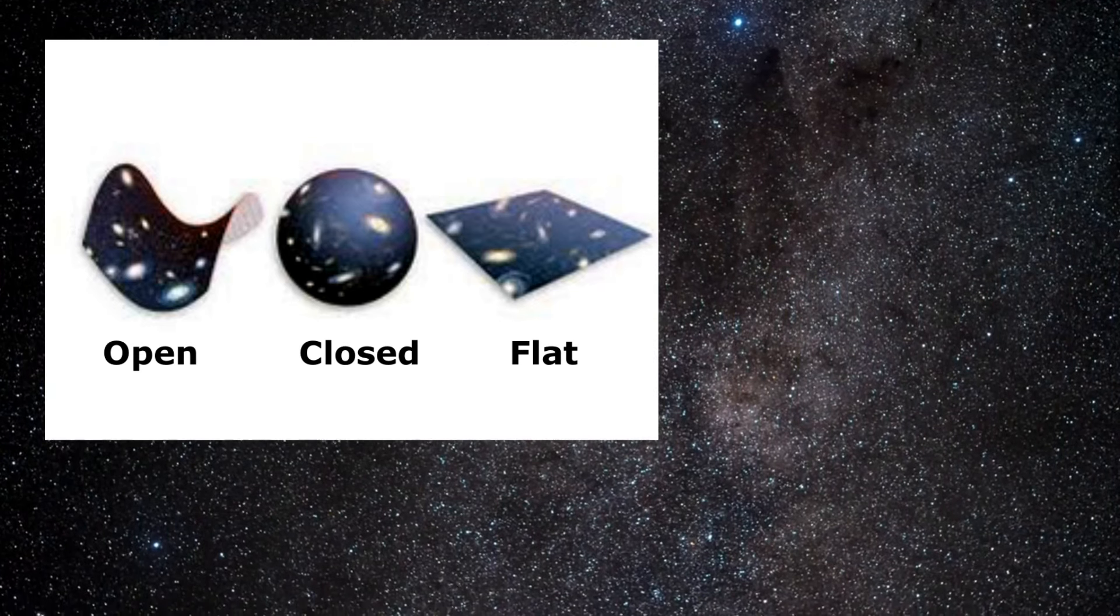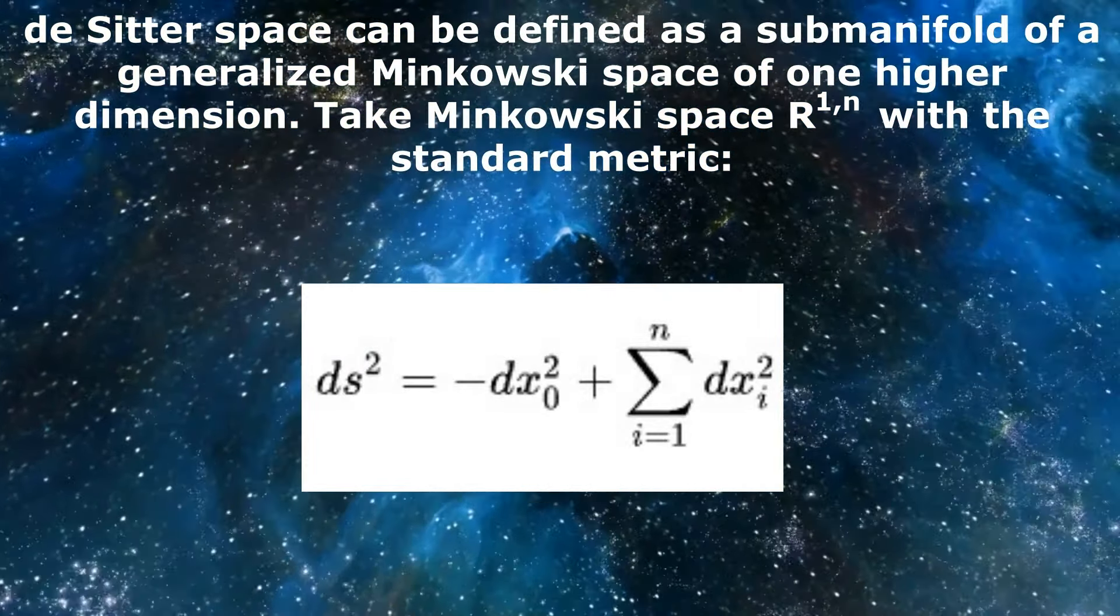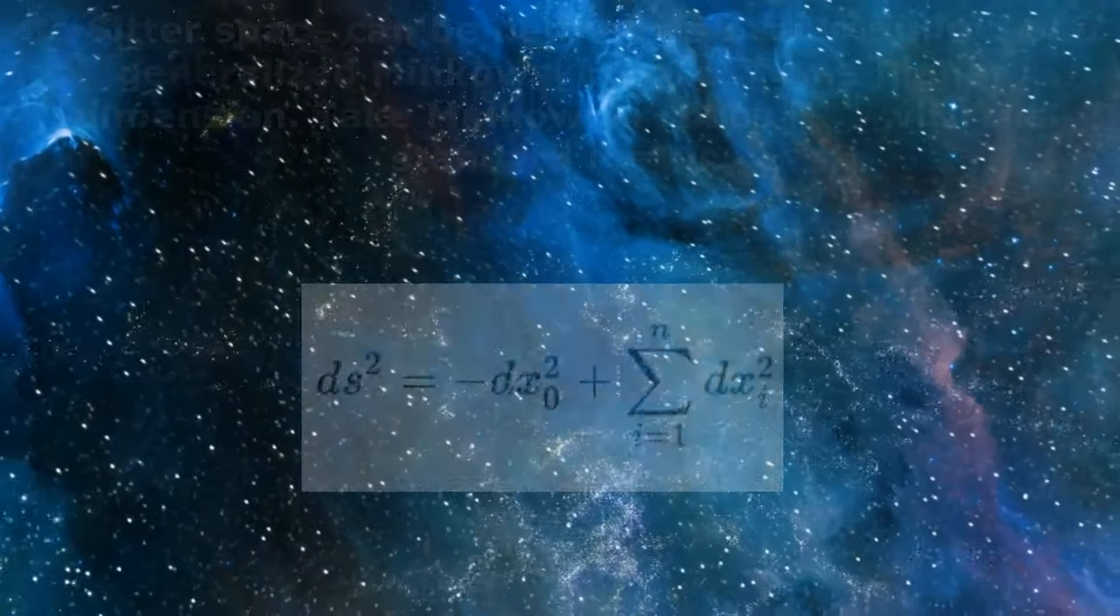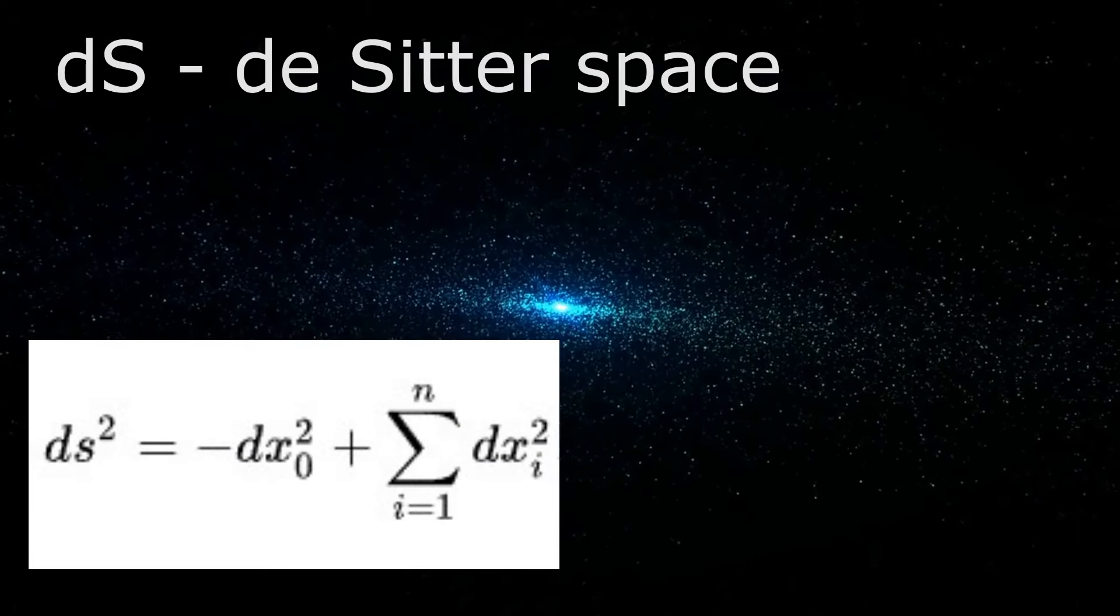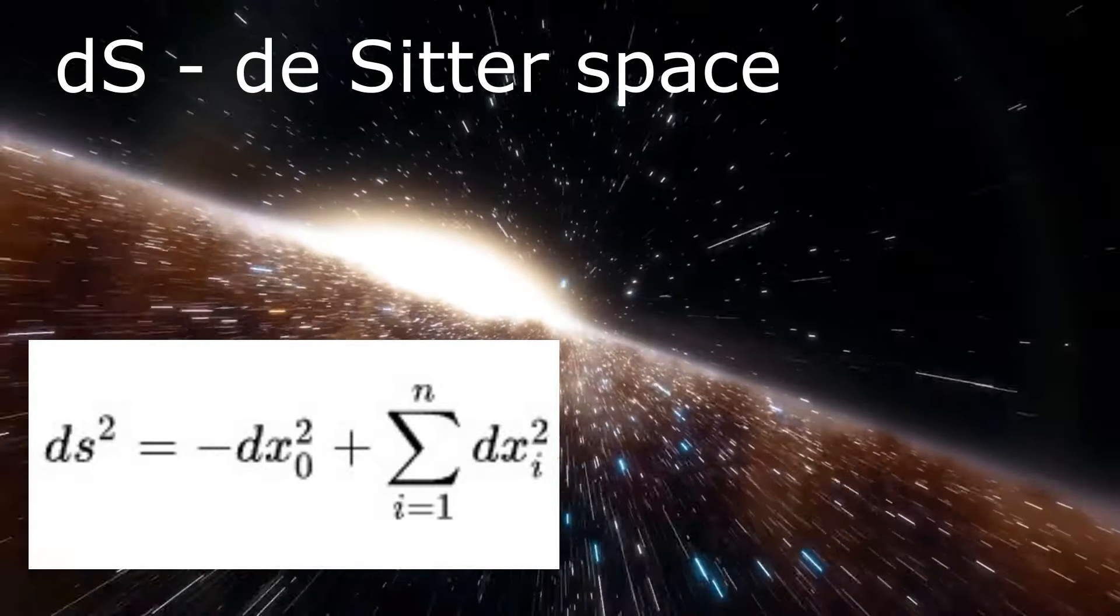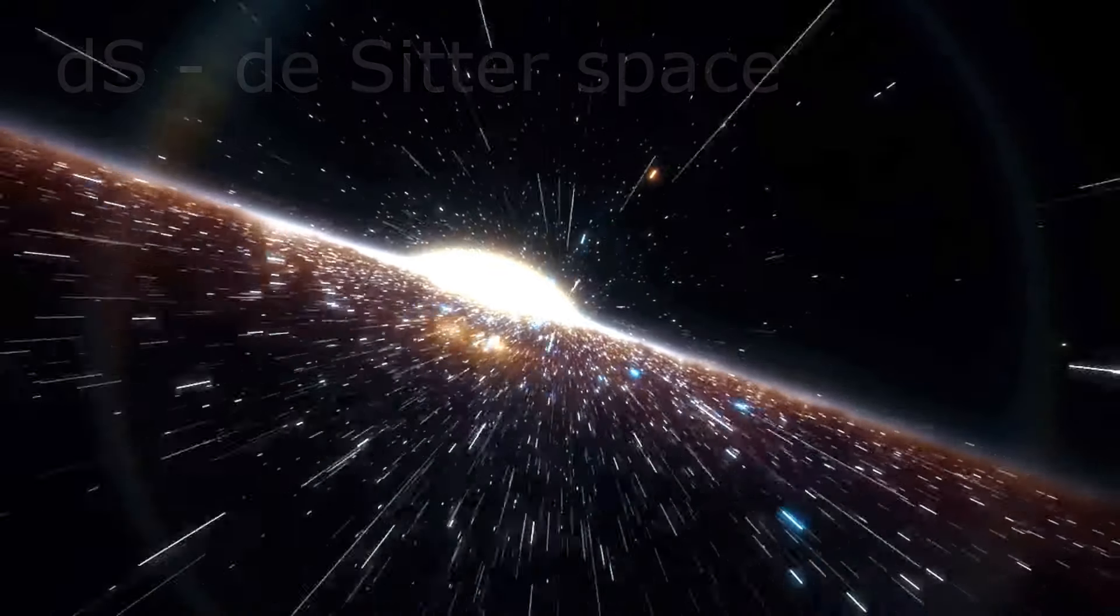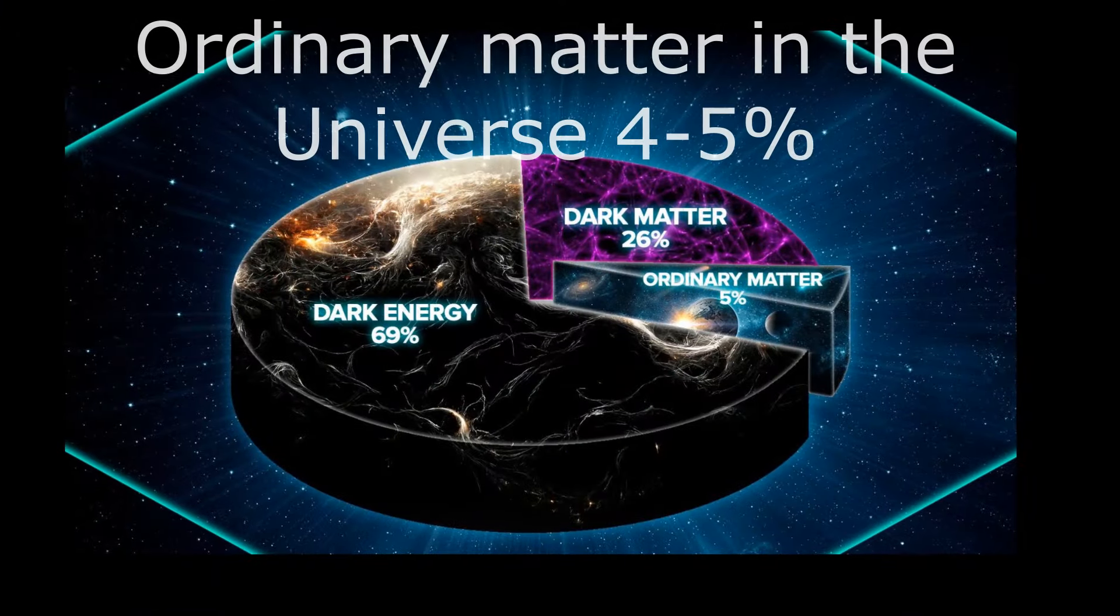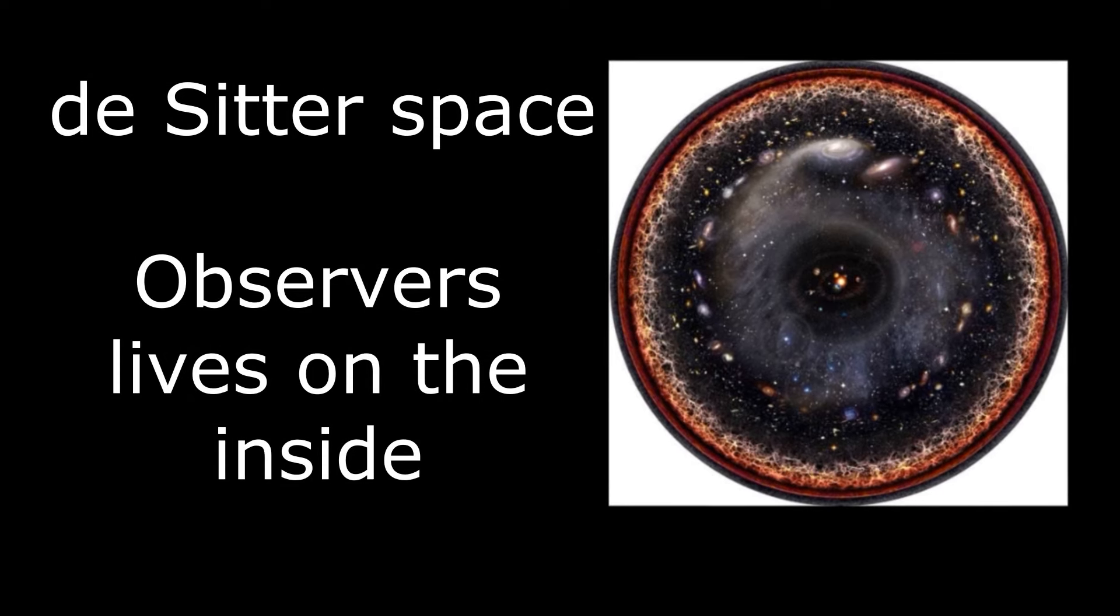De Sitter space and anti-de Sitter space are two different types of solutions to the equations of general relativity which describe the curvature of spacetime in the absence of matter. De Sitter space is a model of spacetime that has a positive cosmological constant representing a universe with a constant positive curvature. This type of universe is often used in cosmology to model an accelerating universe and is believed that we are already living in a de Sitter universe since all the matter represents only four percent of the universe. In this universe, the observer lives on the inside and is surrounded by a cosmological horizon.